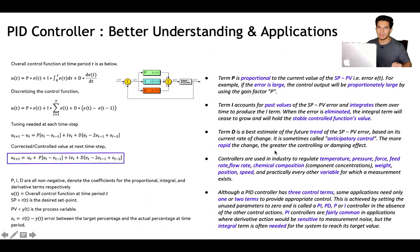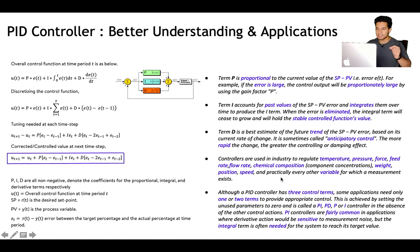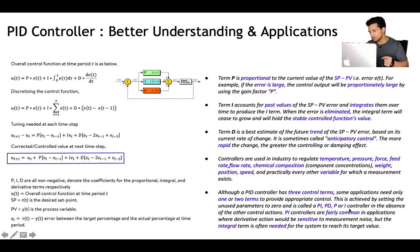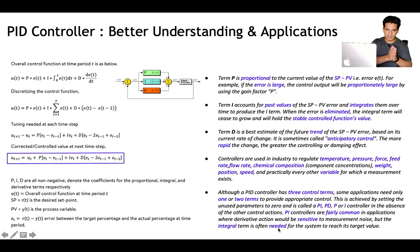Controllers are used in industries to regulate temperature, pressure, force, feed rate, flow rate, chemical composition, position, speed, and every other measurable variable. Although a PID controller has three terms, some applications may need only one or two, achieved by setting unused parameters to zero, giving rise to PI, PD, or P-only controllers. PI controllers are fairly common where derivative action would be sensitive to noise, but the integral term is often needed for the system to reach its target value, since it accumulates the total corrections made.